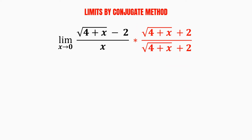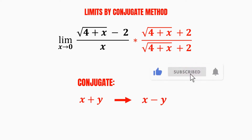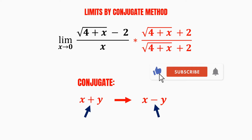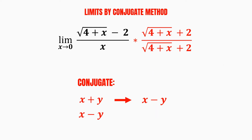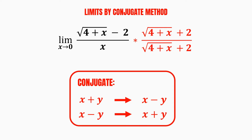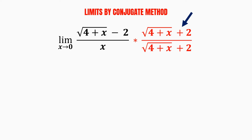If you're wondering what a conjugate is, let me briefly explain. Let's say we have an expression x plus y — its conjugate would be x minus y. Notice that we reverse the positive sign to a negative sign. So if we are given x minus y, its conjugate would be x plus y. That's why we have a positive sign here, as we initially had a negative sign.